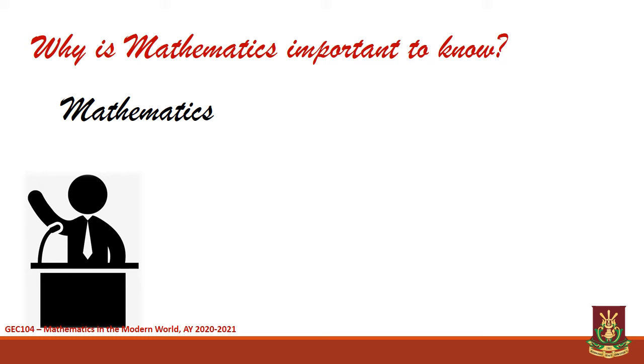At this point, we will cite some reasons why mathematics is important to know. Number one, it puts order in disorder. With the help of mathematics, we can organize well. There are available methods in mathematics that can be utilized in assigning courses to teachers, arranging schedules, deciding where to build hospitals, finding strategic areas to put CCTVs, and more. When faced with this array, one may look at mathematics for possible solutions. Number two, it helps us become better persons. Adequate knowledge in mathematics may help make us better persons since it can be used as a guide in making better decisions in life.